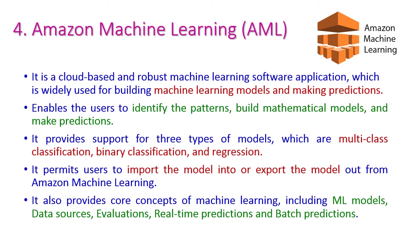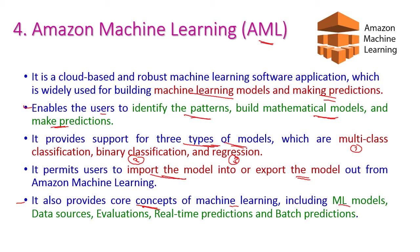Amazon Machine Learning (AML) is equally powerful as Google Machine Learning. It is used to build machine learning models as well as making predictions, and it enables users to identify patterns, build mathematical models, and make predictions. AML provides support for three types of models: multi-class classification, binary classification, and regression. It also provides core components of machine learning which include machine learning models, data sources, evaluations, real-time predictions, and batch processing.